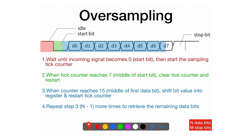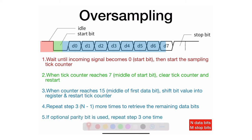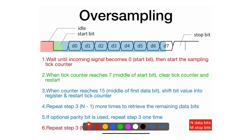Finally, the receiver handles the stop bit. For one stop bit, the tick timer runs from zero to 15, landing at the middle of the stop bit. For one and a half stop bits, it runs an extra seven ticks. For two stop bits, it runs another full 15 ticks. After that, the line returns to idle — and that's how oversampling works.